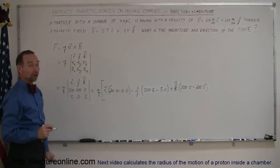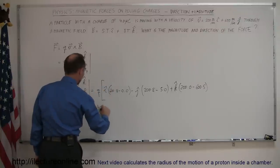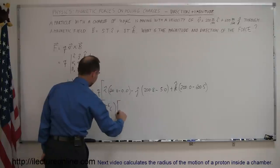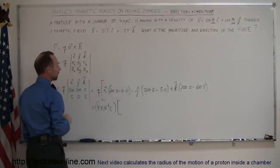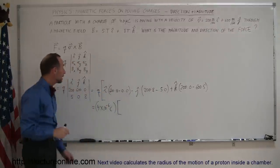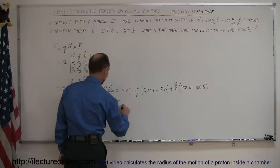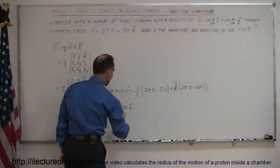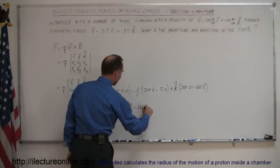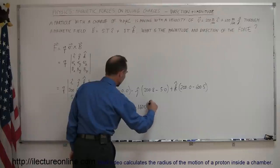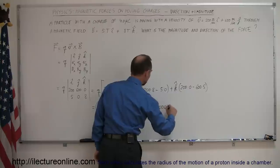Multiply that times the charge. The charge was 4 microcoulombs, so it's 4 times 10 to the minus 6 coulombs, multiplied by I. The units inside the brackets are meters per second times teslas. So we have 600 times 8 minus 0, which is 4,800 in the x direction; minus 1,600 in the y direction; and minus 3,000 in the z direction.